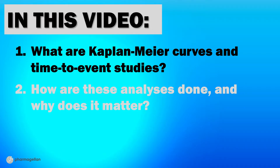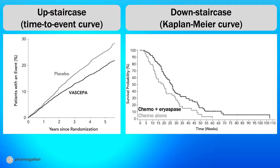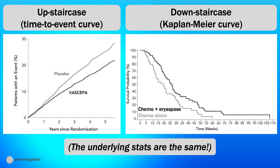An important thing to realize about graphs like these is that even though the staircases go down in one figure and up in the other, the underlying trials are pretty similar. Both studies measure how a drug affects the time before a patient dies or has some sort of non-fatal bad outcome, like going to the hospital or having their tumor progress. Just like the name implies, a time-to-event study estimates the amount of time that passes from when a patient is treated with a drug until they experience a defined event. In most of these studies in drug development, the event is something bad, and the drug is meant to reduce its incidence.